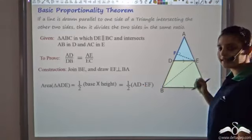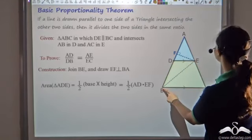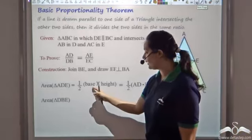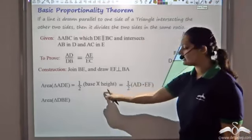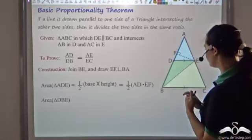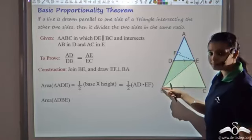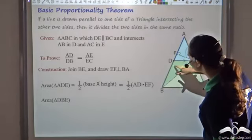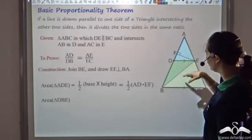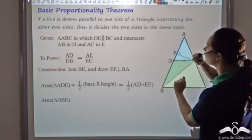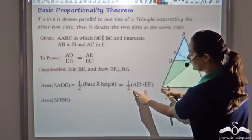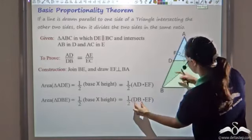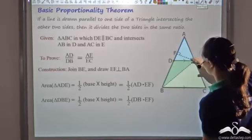Now let's find the area of triangle BDE. Again, area equals half times base times height. Taking DB as the base, the opposite vertex is E, and the perpendicular from E is EF — noting that the altitude falls outside triangle DBE, so we extend side DB. Thus area of triangle BDE equals half times BD times EF.